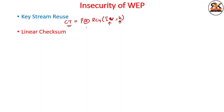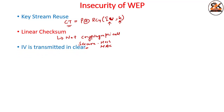The next insecurity is the linear checksum. The checksum computed on the payload is linear and not cryptographically secure — unlike cryptographic hash functions or MAC codes. Another insecurity is that the IV is transmitted in clear. The attacker knows 24 bits of every packet and can use cryptanalysis to guess the other bits.